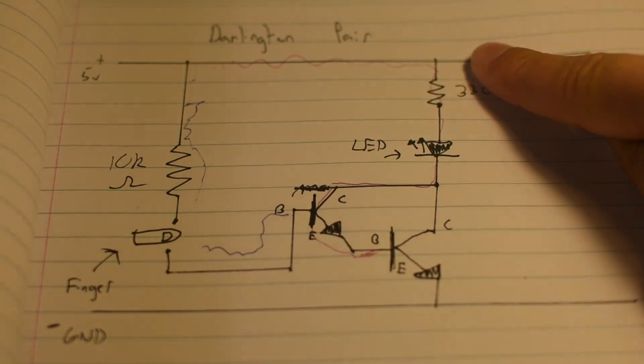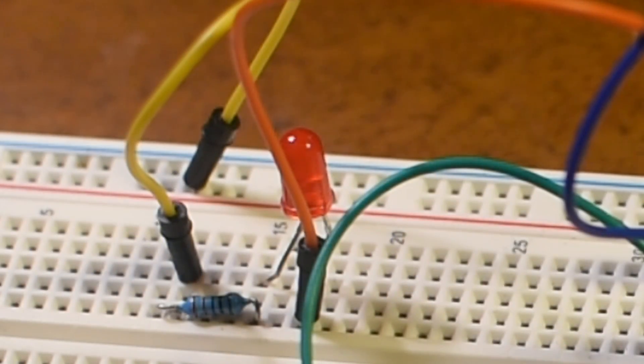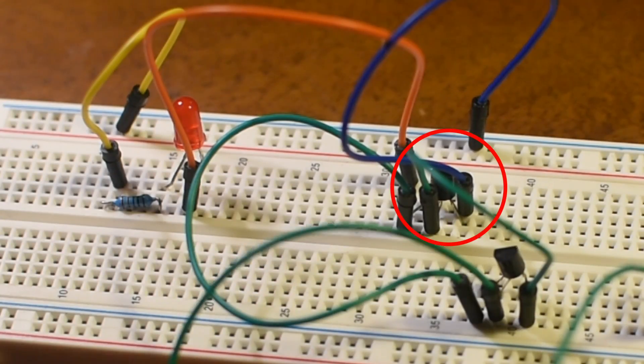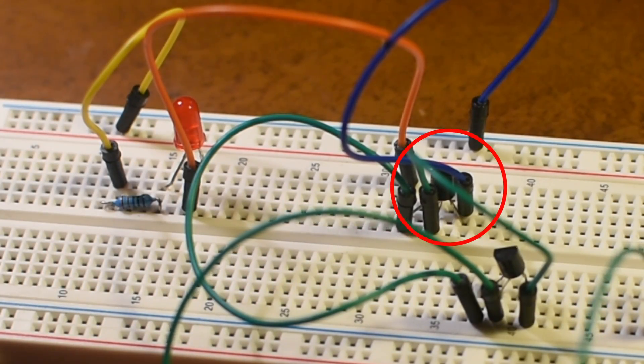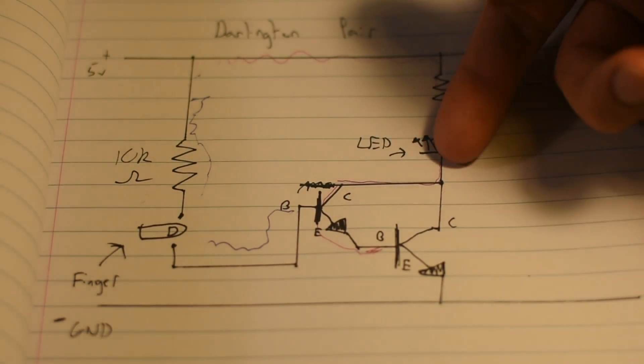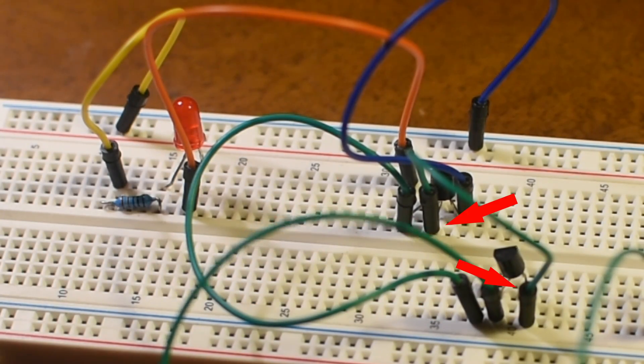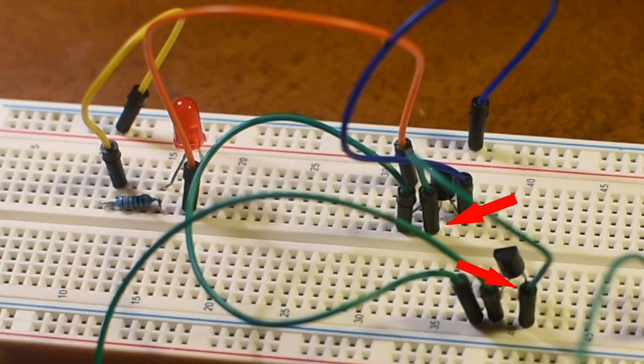Firstly, we have our absolute classic of an LED circuit with a 330 ohm resistor. After this, we have one of the two transistors which then goes back to ground. Now, after our resistor, we have a split which goes to our second transistor's collector pin. The emitter pin then flows to the base of our first transistor over here.